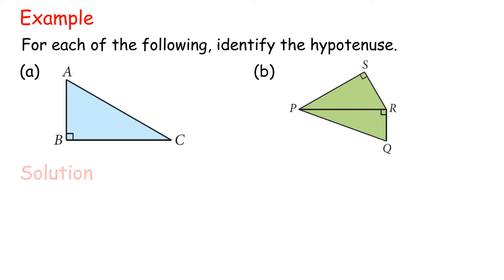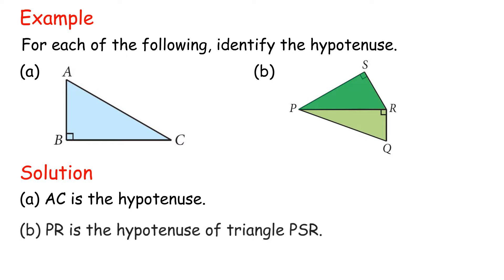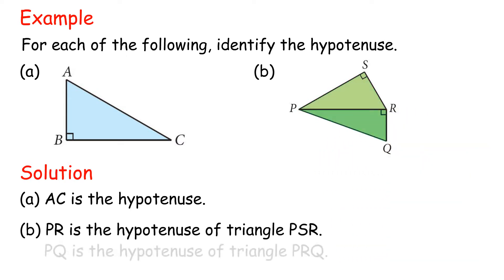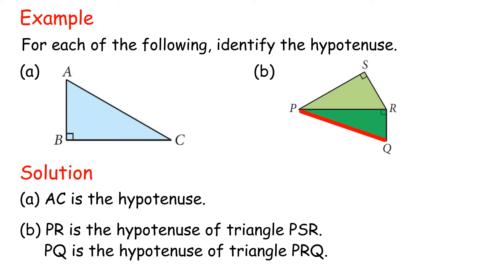Solution. A: AC is the hypotenuse. B: PR is the hypotenuse of triangle PSR. PQ is the hypotenuse of triangle PRQ.